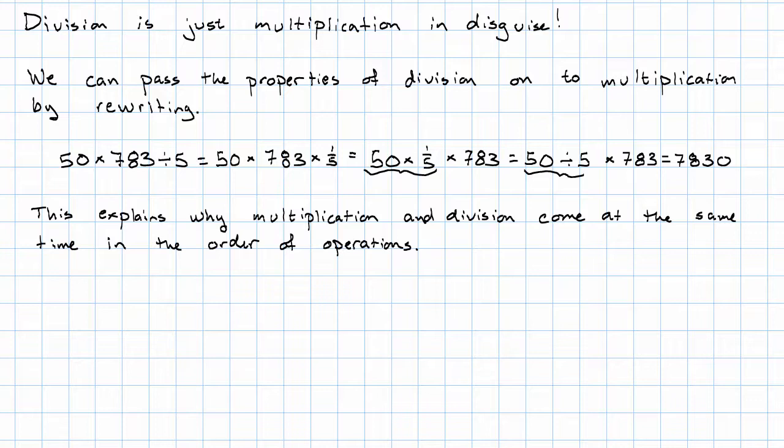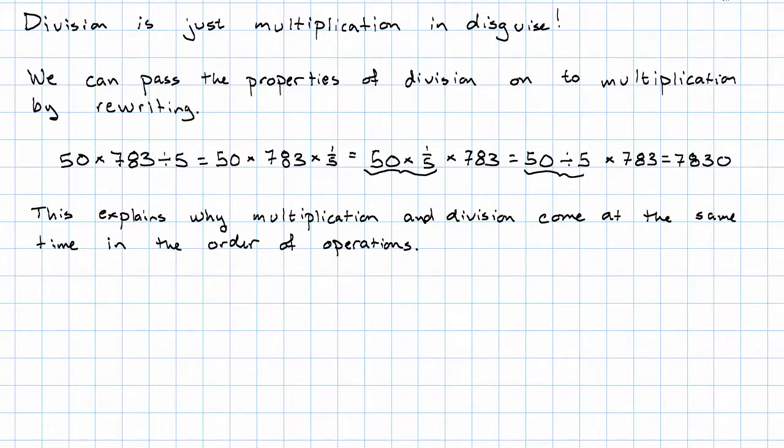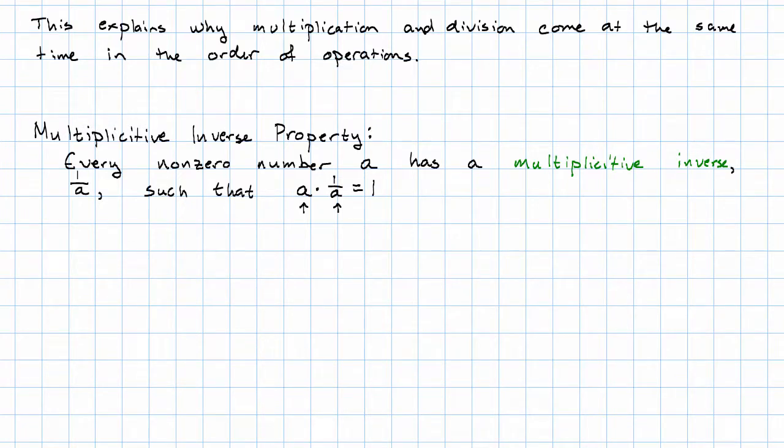Now there's a word for this property and the way I'm going to state it is going to feel weird at first. I'm going to state this by saying every non-zero number a has a multiplicative inverse one over a such that the number a times the number one over a is one. In this context, that notation one over a is just the notation for the multiplicative inverse.